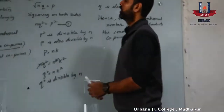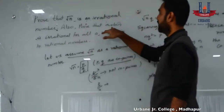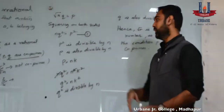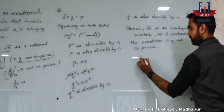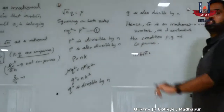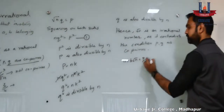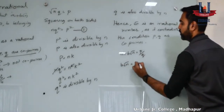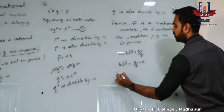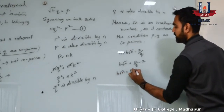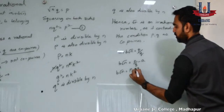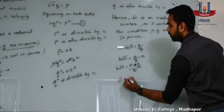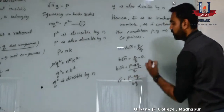Now, let us prove the second part of the question, that is a plus b root n is irrational for all rational values a and b. Let us assume a plus b root n again as some rational value, that is p by q. Now, let us simplify this. We get b root n is equal to p by q minus a, which gives us b root n is equal to p minus a q by q.